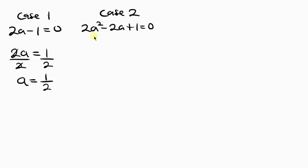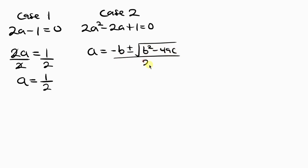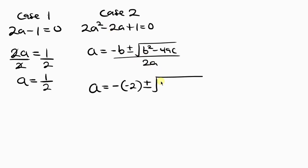For case 2, we have a quadratic equation, so we'll use the quadratic formula: A equals negative b plus or minus the square root of b squared minus 4ac, all over 2a. Here b is negative 2, a is the coefficient 2, and c is 1. Substituting: negative of negative 2 plus or minus the square root of negative 2 squared minus 4 times 2 times 1, all over 2 times 2.